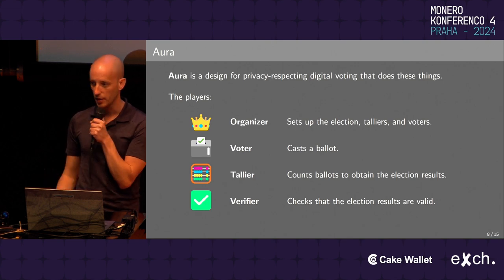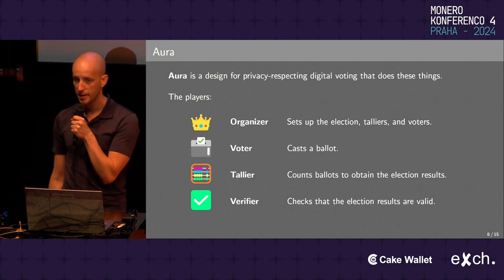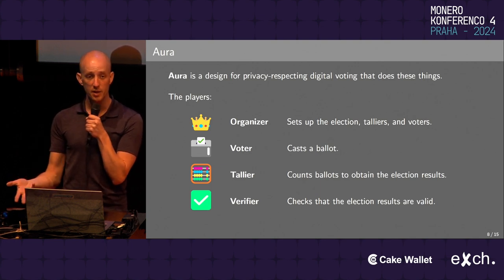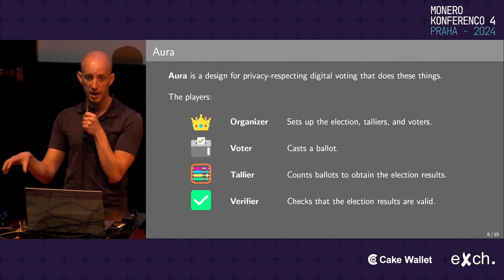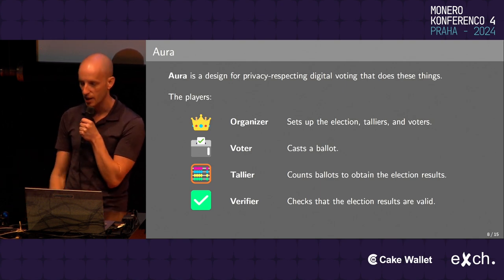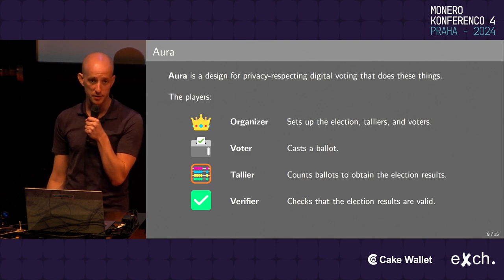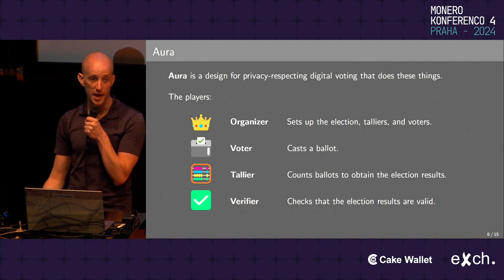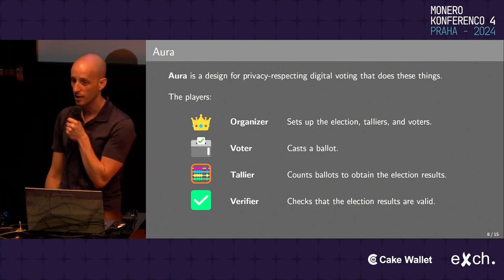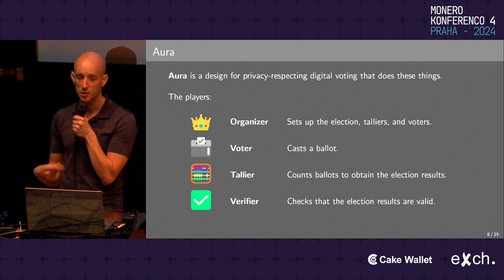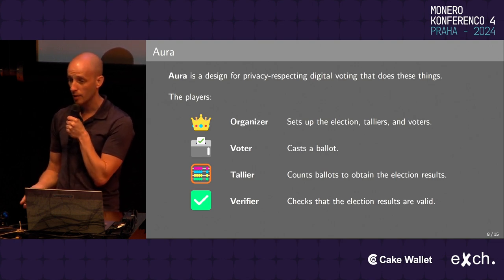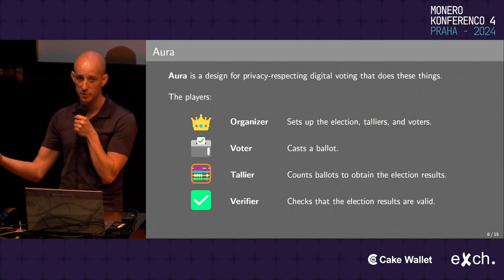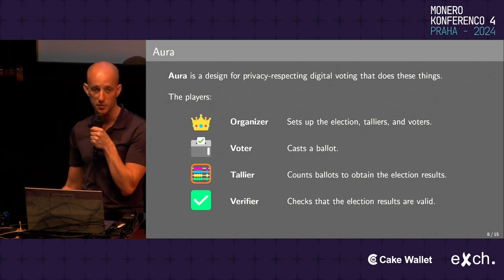Several players are involved in conducting an election. The organizer sets up the election — what's being voted on, what the selections are, who tallies the votes at the end, and which voters are permitted to vote. You'll often want multiple tallyers so if one turns evil they can't do as much damage. The voter casts a ballot. The tallyer is one of possibly a group of entities that counts the ballots to obtain results. A verifier could be anyone — any network observer or participant — who should be able to check that the election results are valid.